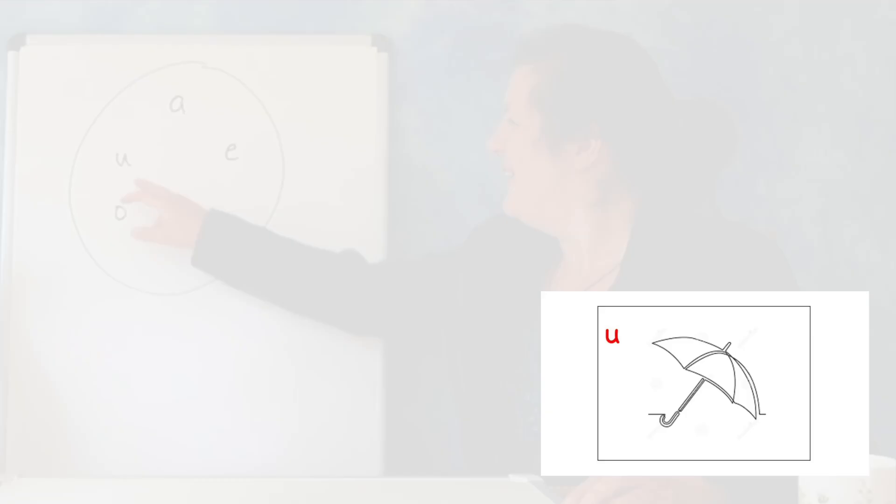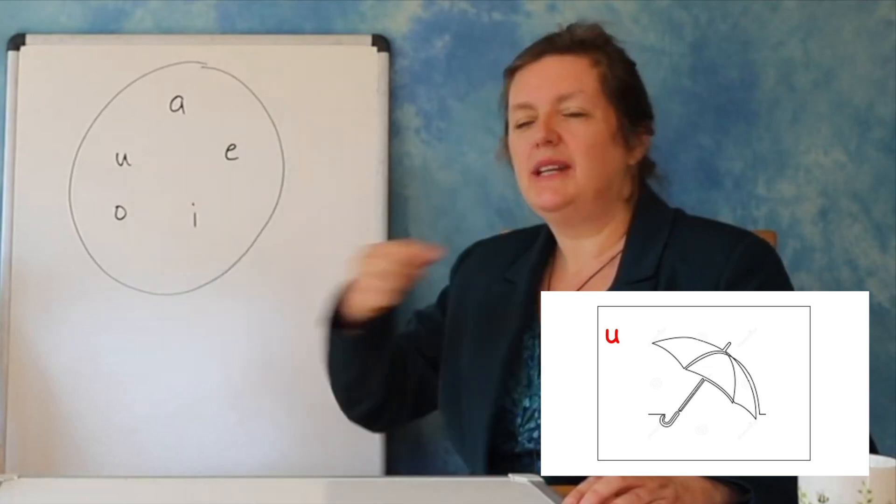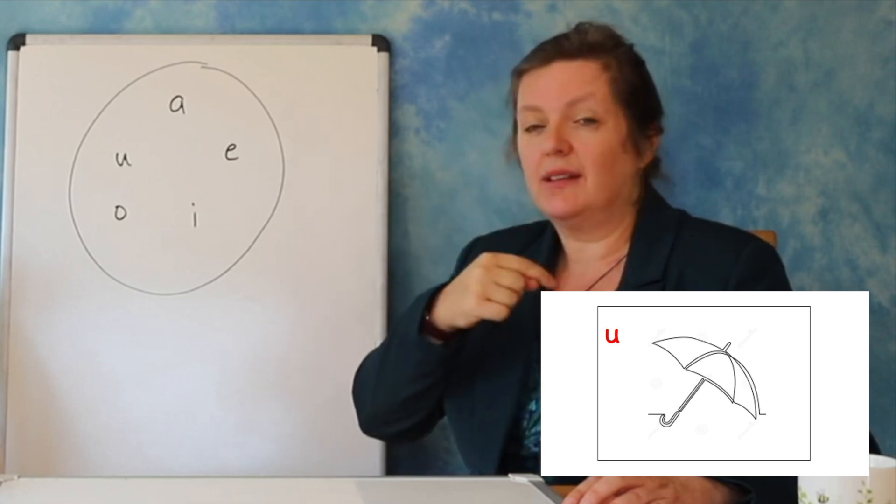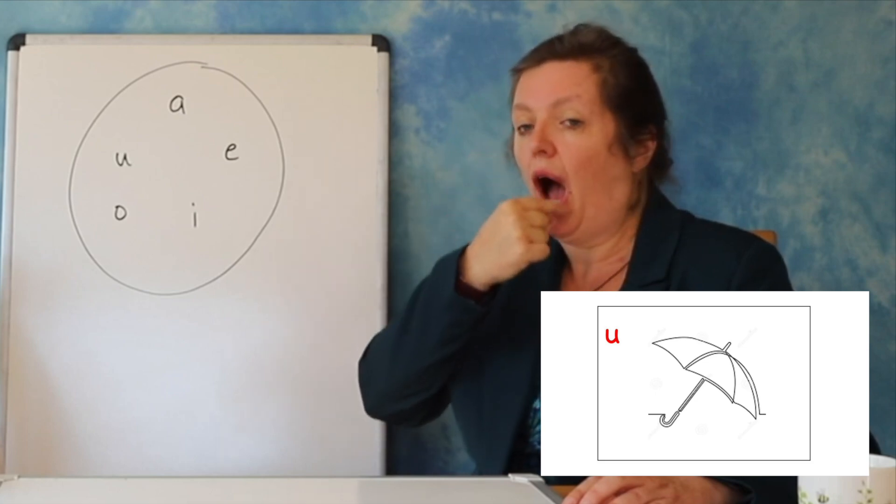U, the last one, we need an open mouth, so again we make the shape of the letter when we say the sound U.